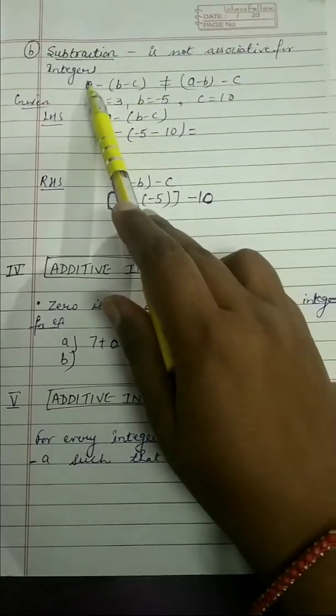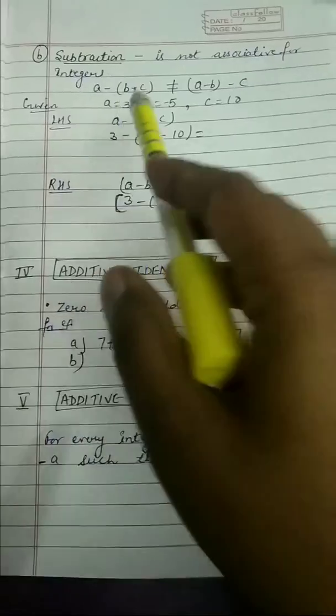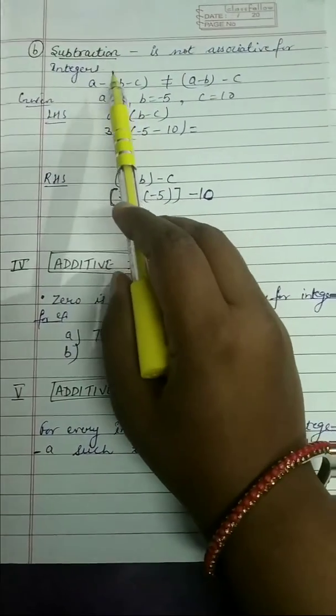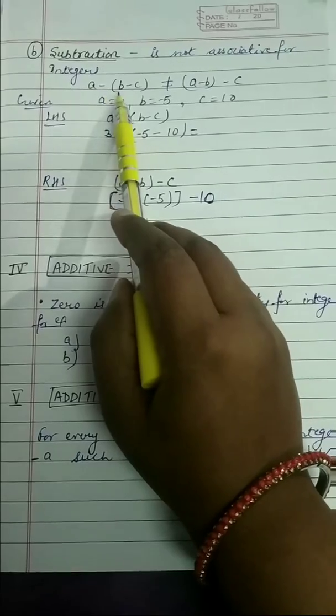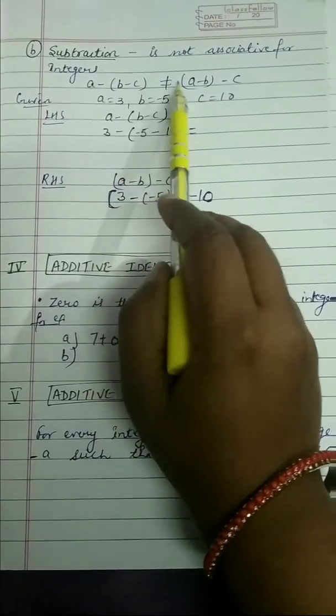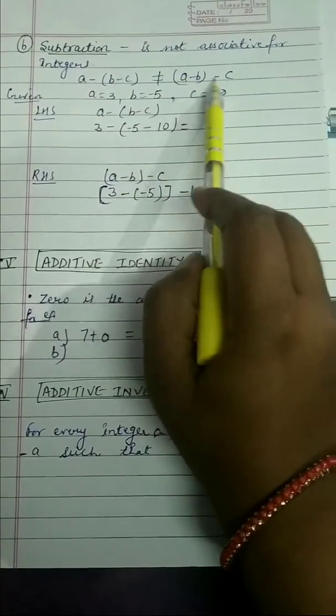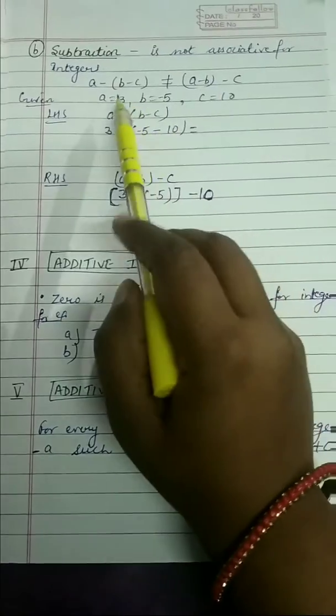Subtraction is not associative for integers. The formula we follow for associative property is A minus (B minus C) is not equal to (A minus B) minus C. Let's take an example.